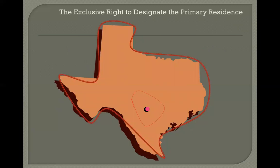The right to designate the child's residence and the right to collect child support are generally two rights that are not shared. Regarding the right to designate the child's residence: in a case that has a child, the court will usually designate one of the parties to be the one who determines where the child resides. The court may require that the child resides within a particular school district, city, county, county and surrounding contiguous counties, a particular state or country, or there might not be any restriction. In my experience, this is one of the most heavily litigated aspects of a case.